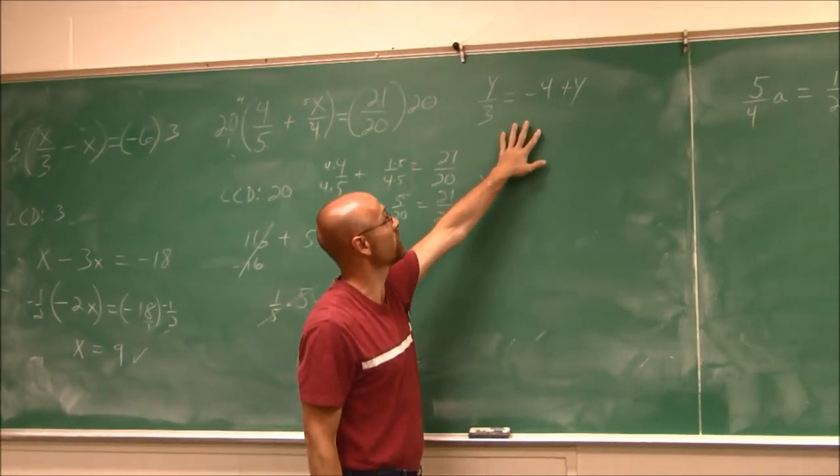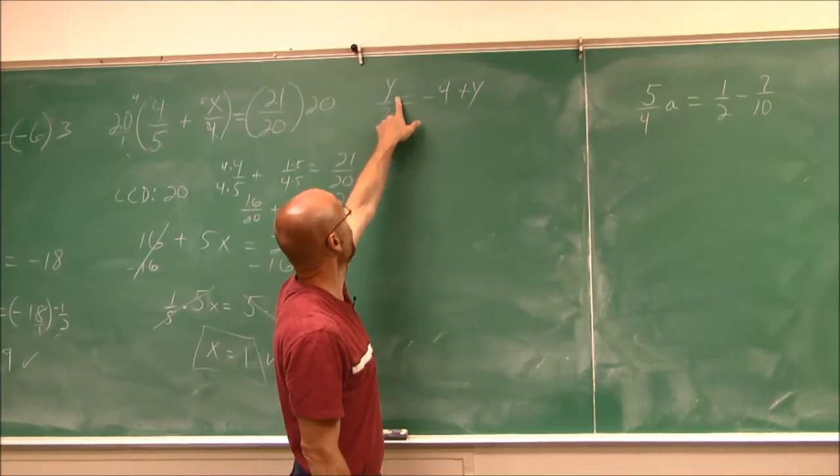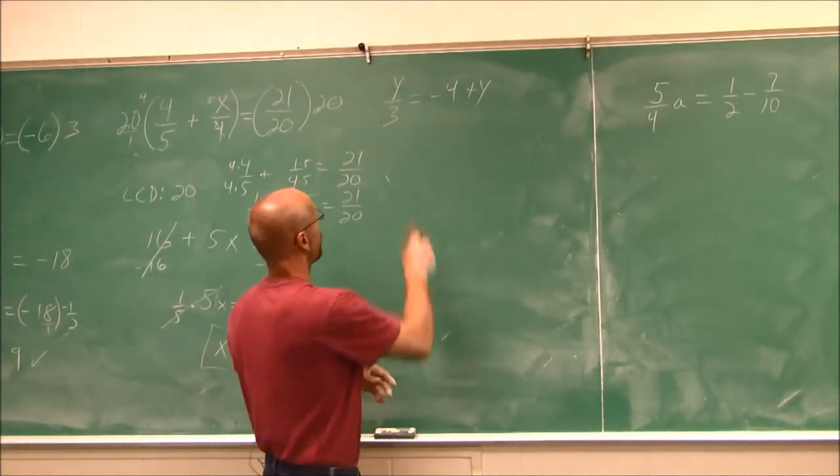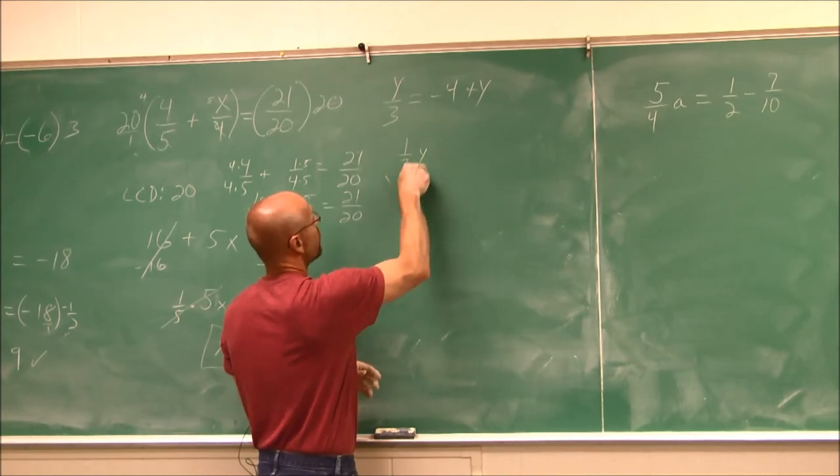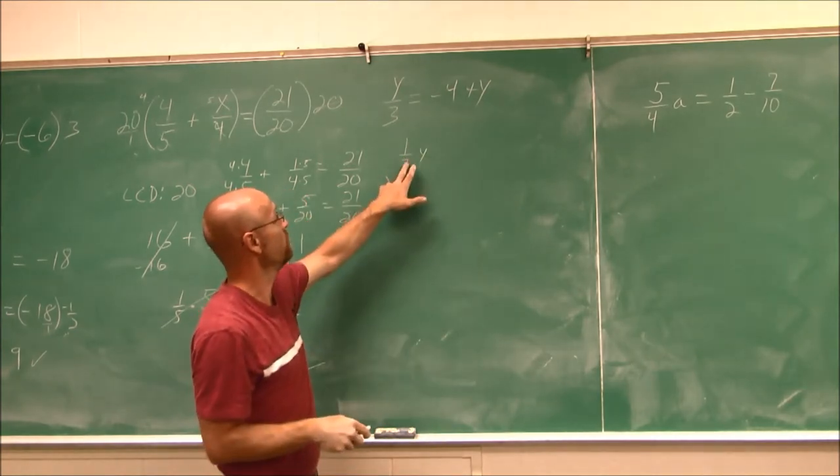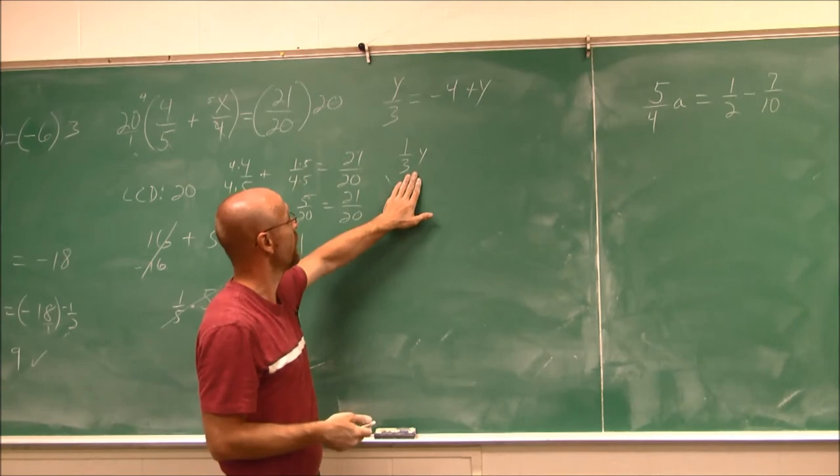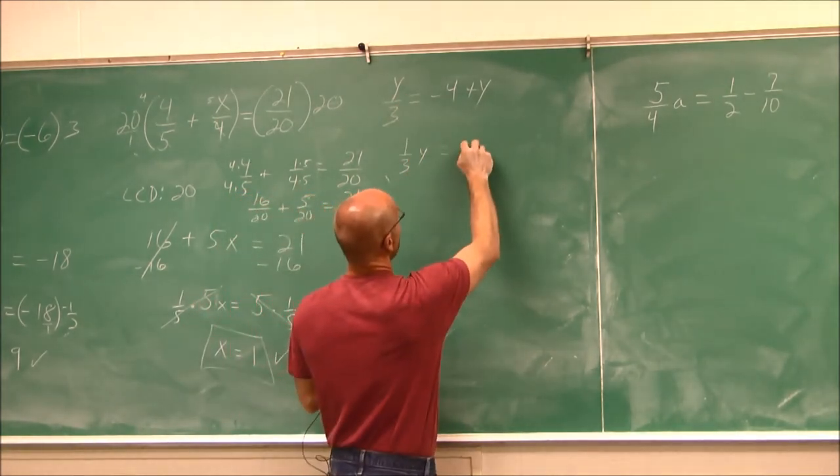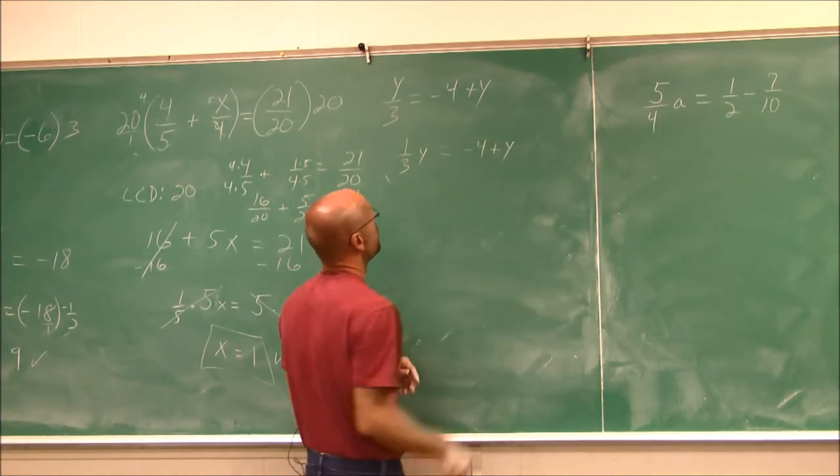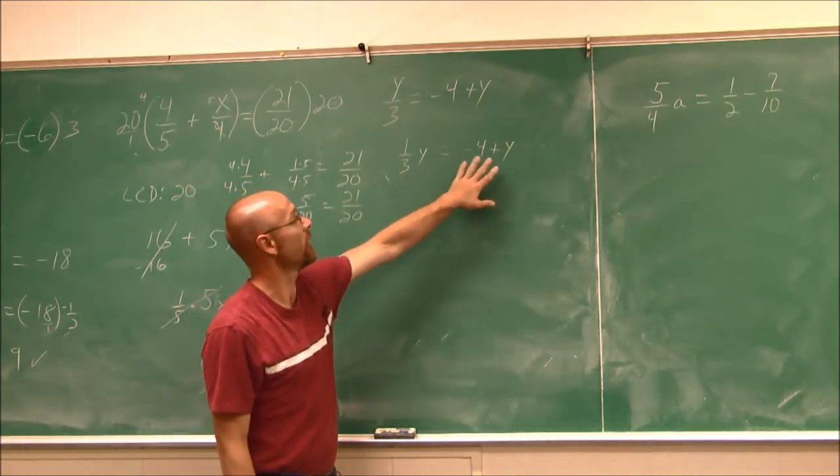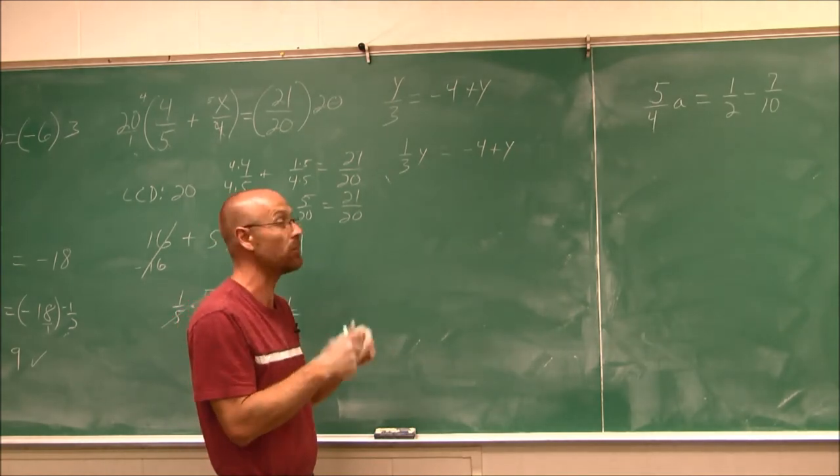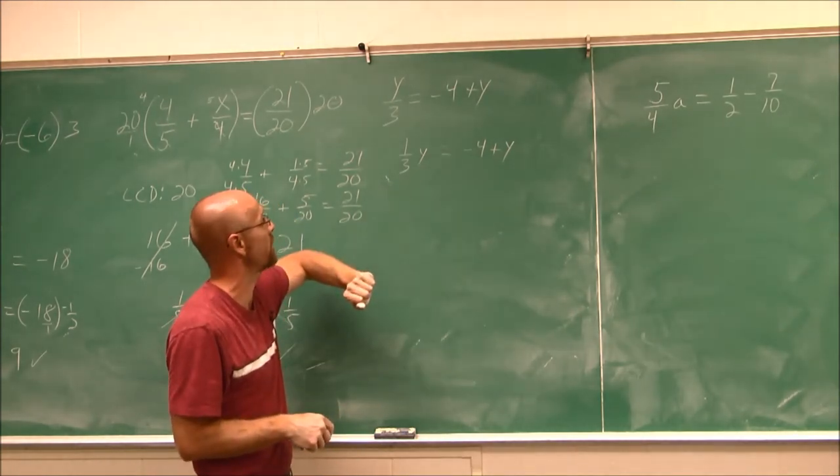All right. One more example here. Here we have y over 3. And this is just a different way of writing 1 third of y. This would say y is divided by 3. So I do this just so I don't lose track that I'm dividing by 3. Now, if I look, I've got to be careful. There's y's in two different places. So eventually, I have to combine like terms. But let's get rid of this fraction.